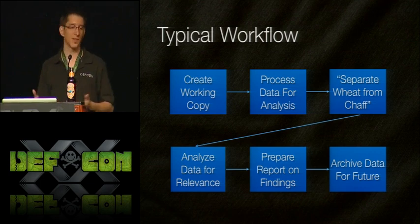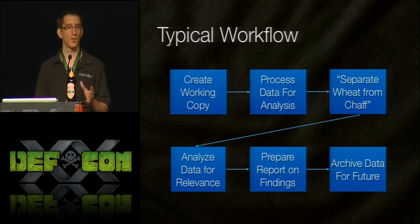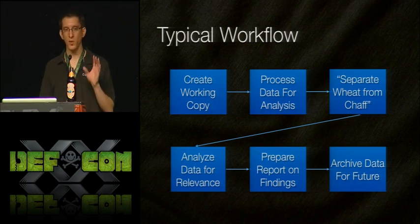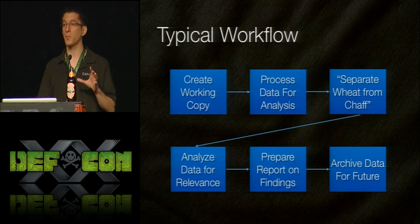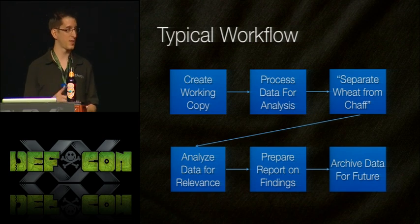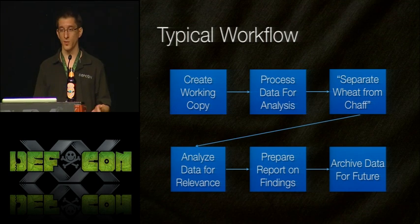When processing, you're doing things like calculating MD5, SHA-1, or SHA-256 hashes, identifying file types, and making sure the extensions on each file match the actual file format. Next, you separate the wheat from the chaff — sifting through the data to narrow down what you need to look at during analysis, because you're not going to want to analyze every single file on the hard drive, only the stuff that may be relevant to your case.